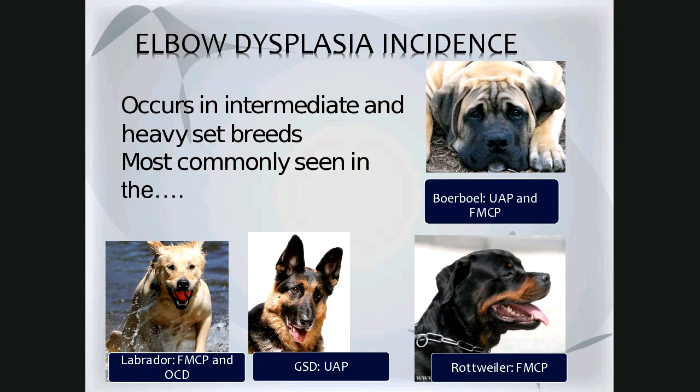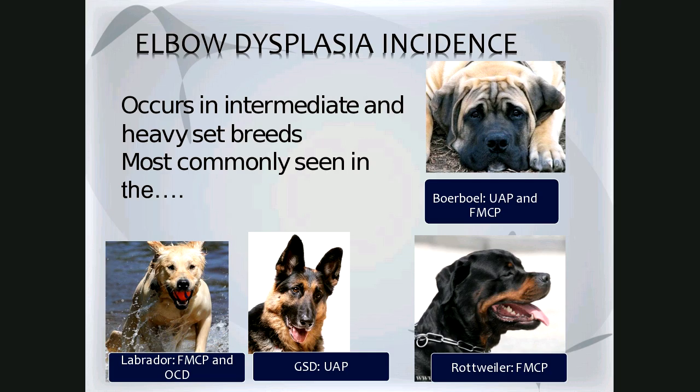Elbow dysplasia normally occurs in intermediate and heavyset dogs and is most commonly seen in certain breeds. Labradors tend to get fragmented medial coronoid process and OCD, often occurring together. The German Shepherd is prone to ununited anconeal process. The Rottweiler is prone to fragmented medial coronoid process. And the Bulldog gets ununited anconeal process and fragmented medial coronoid process.